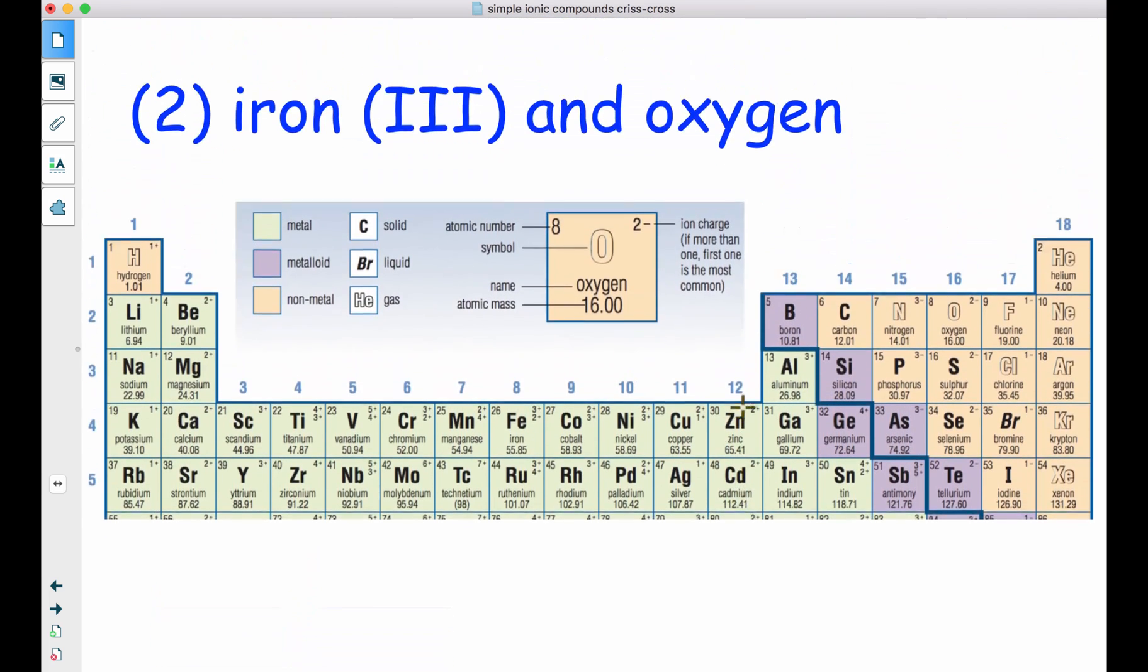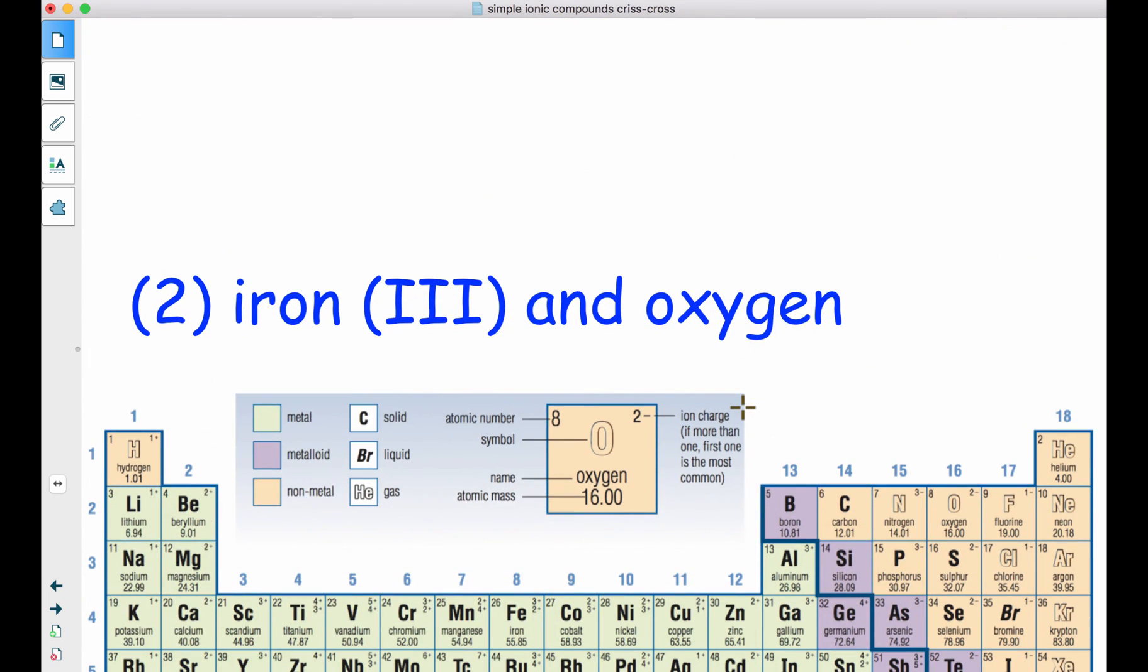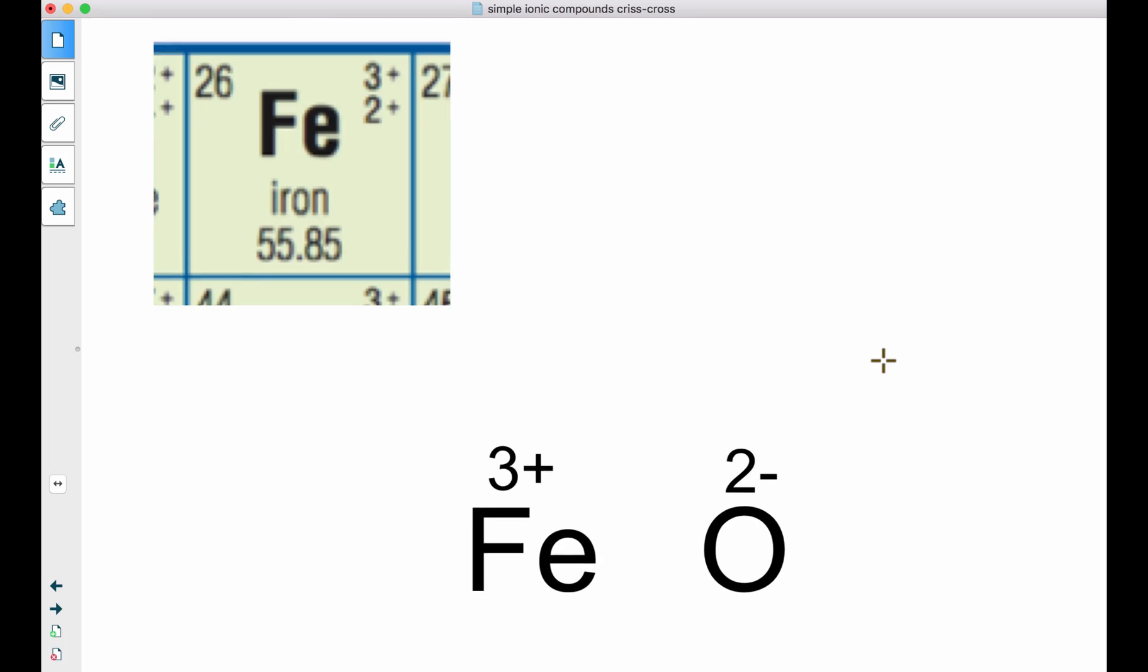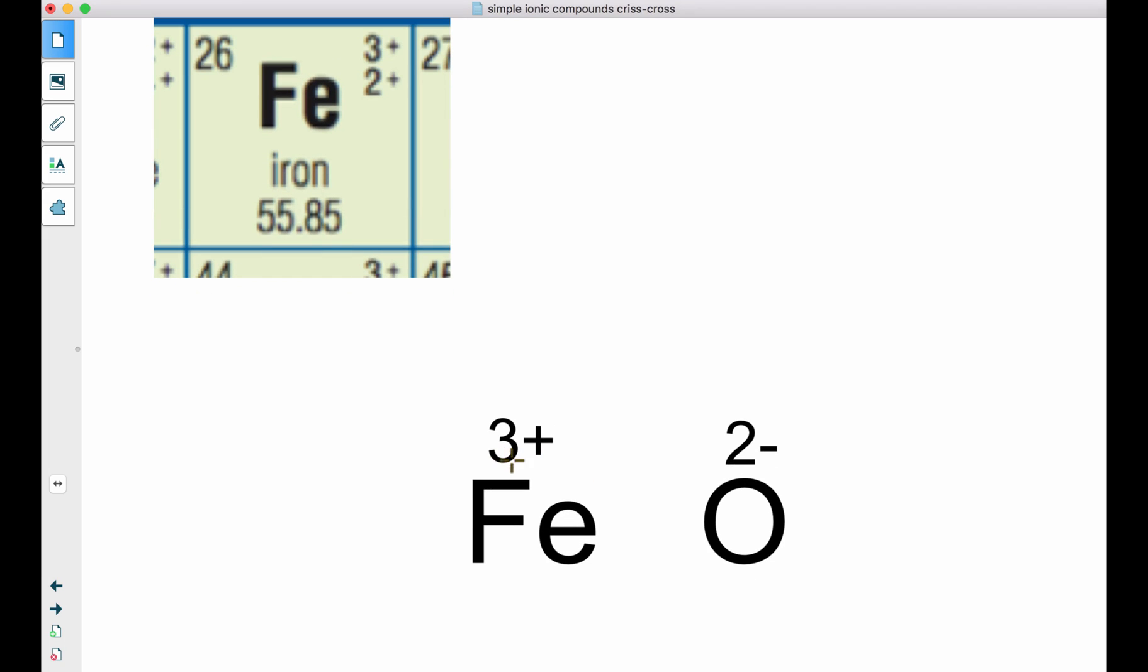Iron can either be 3+ or 2+. So our question says we want to make a combination of iron (III) and oxygen. So when we go to do our crisscross, we will write iron 3+, oxygen 2-.